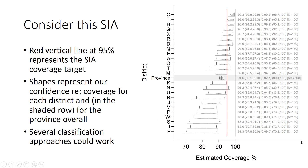Here's an inchworm plot with coverage that's been estimated for quite a few districts. You see each of the districts has a sample size of 150, and when the districts are aggregated together for province-level coverage, the sample size is 3,600.